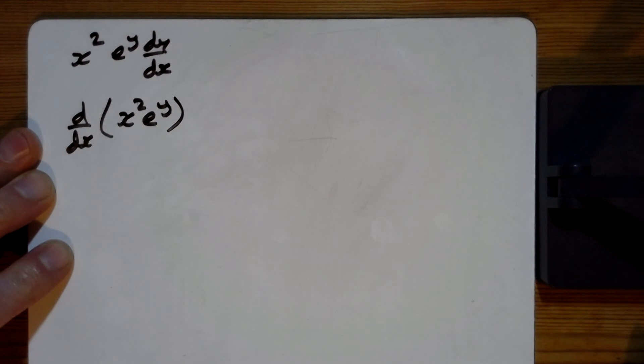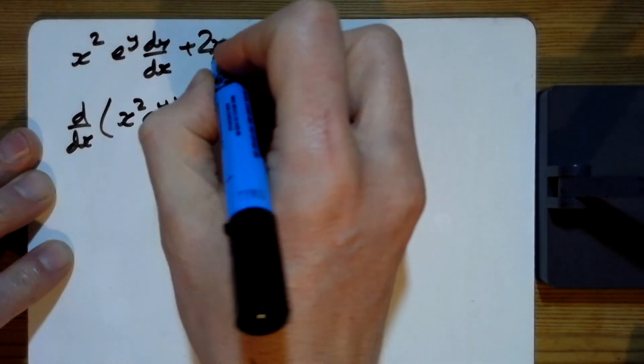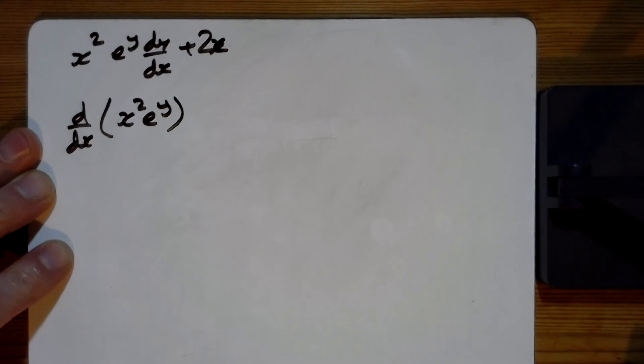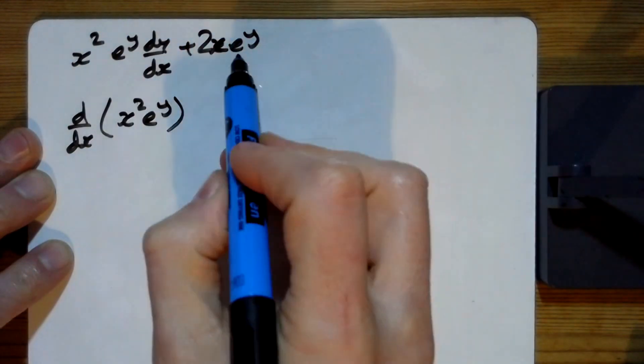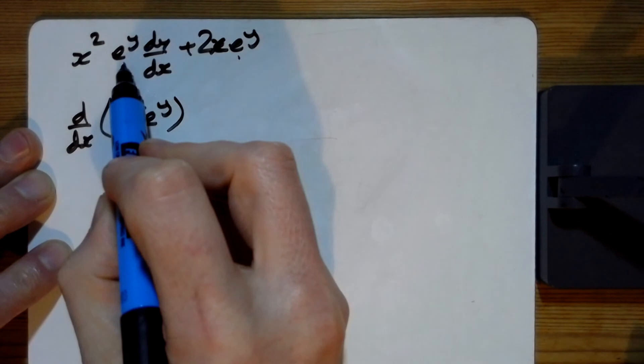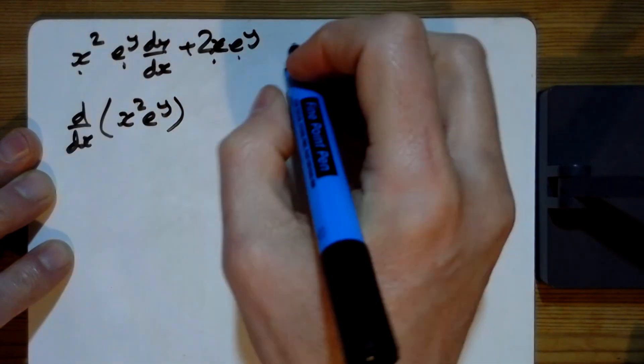Let's look at the next bit. The next bit is plus 2x e to the y. I think I'm right, aren't I? Because look, the e to the y here differentiates to e to the y dy by dx. The x squared here goes to 2x. So that's fine.